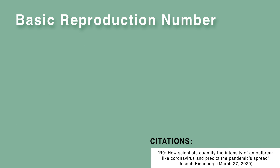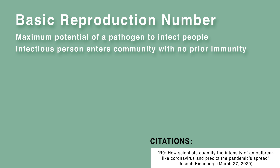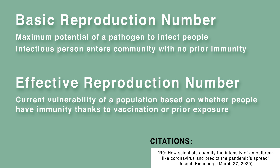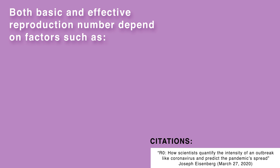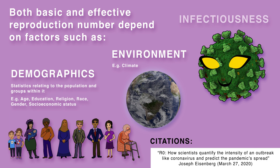The basic reproduction number represents the maximum potential of a pathogen to infect people, basically what would happen if an infectious person entered a community with no prior immunity. The effective reproduction number describes the current vulnerability of a population, based on whether people have immunity thanks to vaccination or prior exposure. The effective R-naught decreases over the course of an outbreak. Note that both basic and effective reproduction number depend on factors such as environment and demographics in addition to the pathogen's infectiousness.